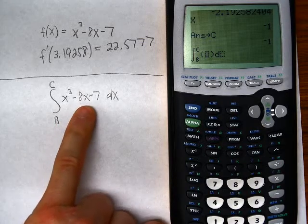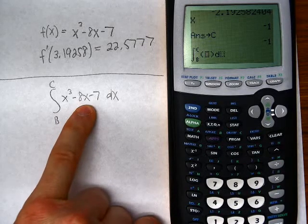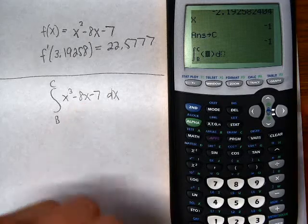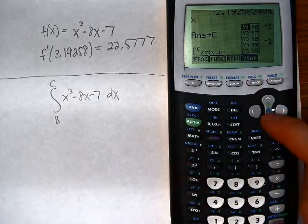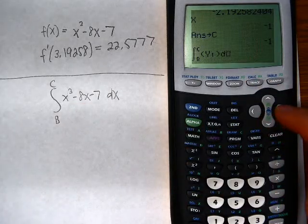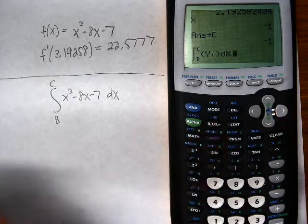Just like with the derivatives, I could type this in, x cubed minus 8x minus 7, but just so I don't risk mistyping it, I'm going to use alpha f4, go to y1, and integrate with respect to x.